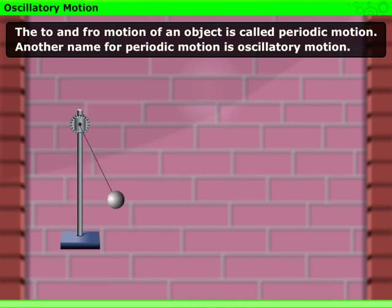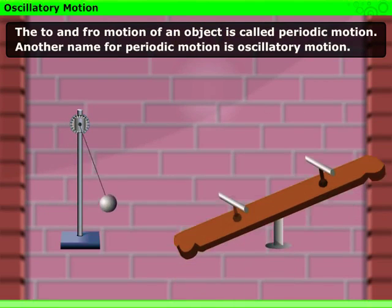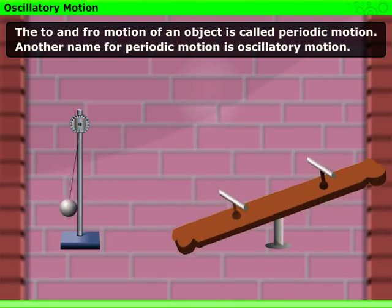The to and fro motion of an object is called periodic motion. Another name for periodic motion is oscillatory motion, for example, motion of a seesaw.